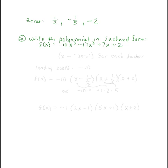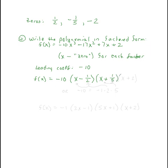Now that we've found the zeros, we can find a factor for each. Remember, factors take the form (x minus the zero). Our leading coefficient was negative 10, which we must include. So the factored form is: f(x) = negative 10 times (x minus 1/2) times (x minus (negative 1/5)) — which becomes (x plus 1/5) — times (x minus (negative 2)) — which becomes (x plus 2).